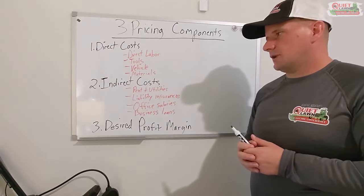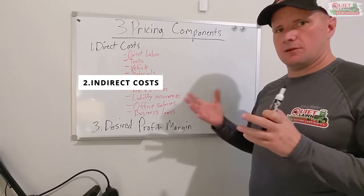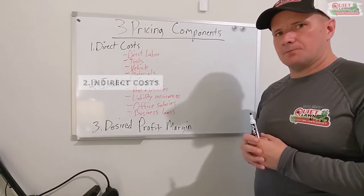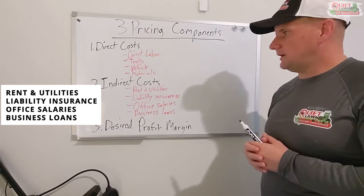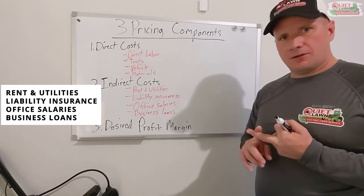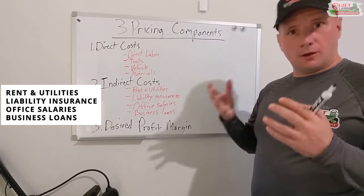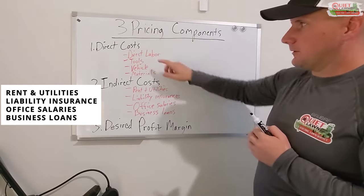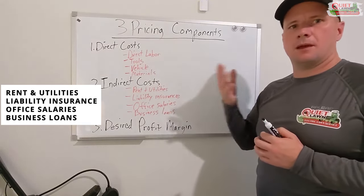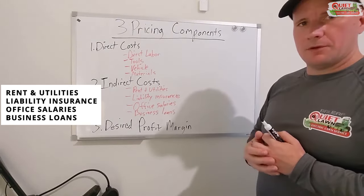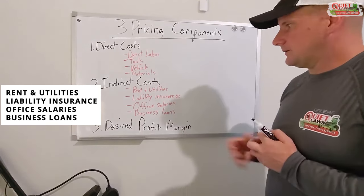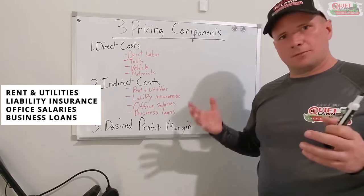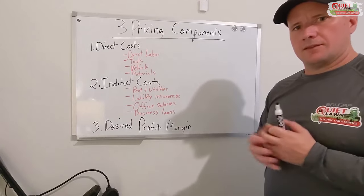The next thing you need to calculate is your indirect cost — some people call this overhead. Indirect costs would be everything else, all of your other expenses not directly tied to that service. So it would be your rent and utilities at your shop, your liability insurance, your cell phone, office salary. If you have people in the office or you have an owner's salary, you would count that. Here's one little thing: you don't want to count your salary twice because it's going to mess up your calculation. So if you're counting your own salary as the owner in direct labor, you don't want to double dip with the office salary.